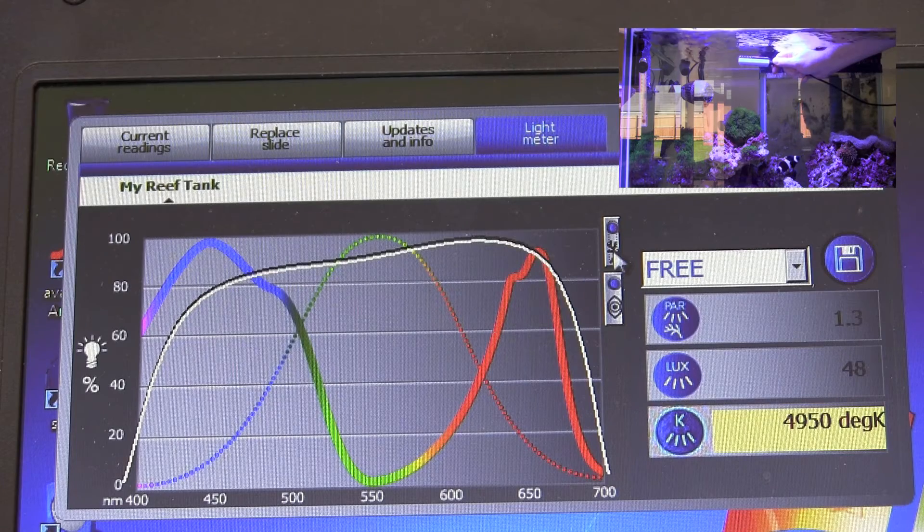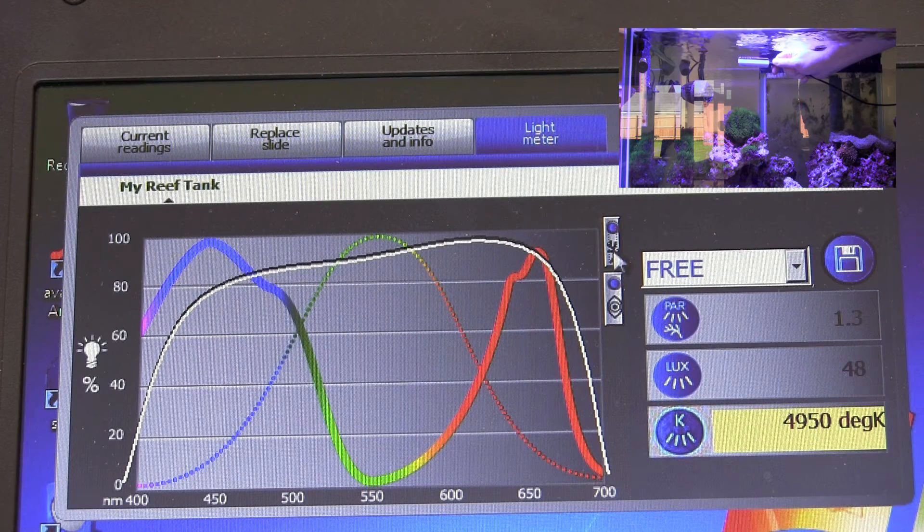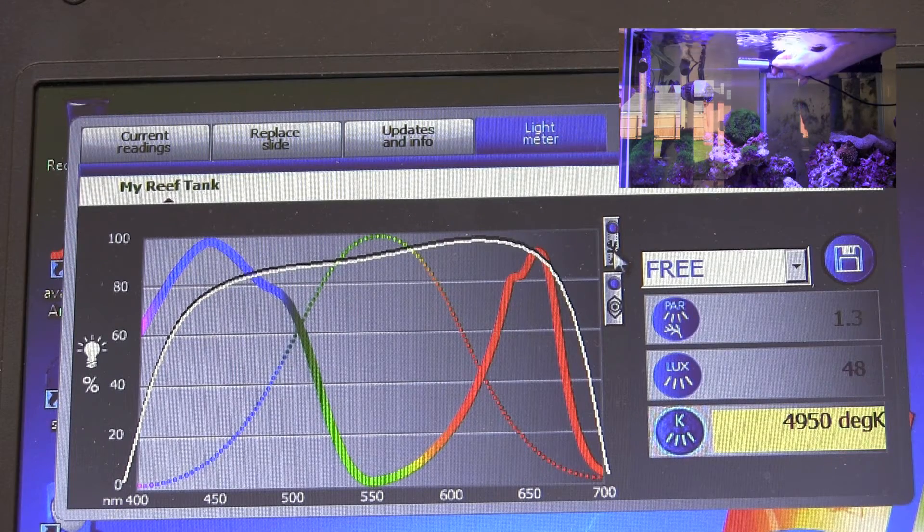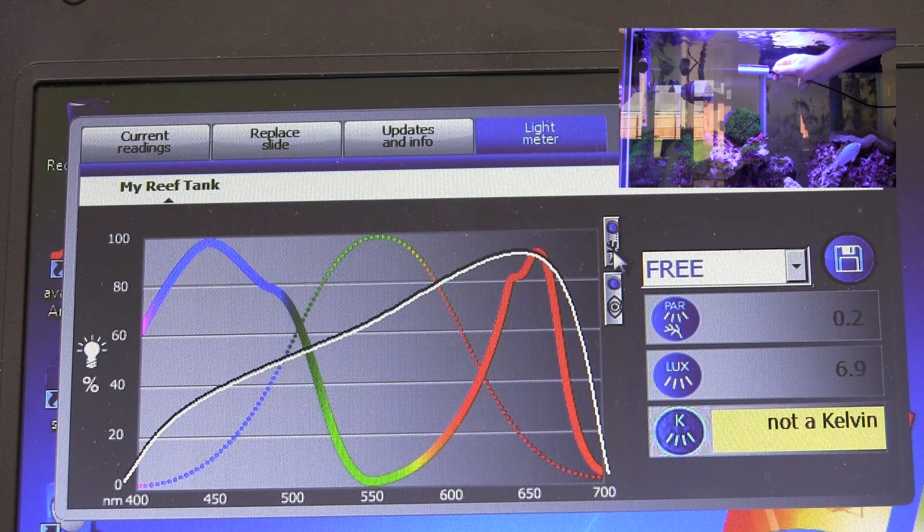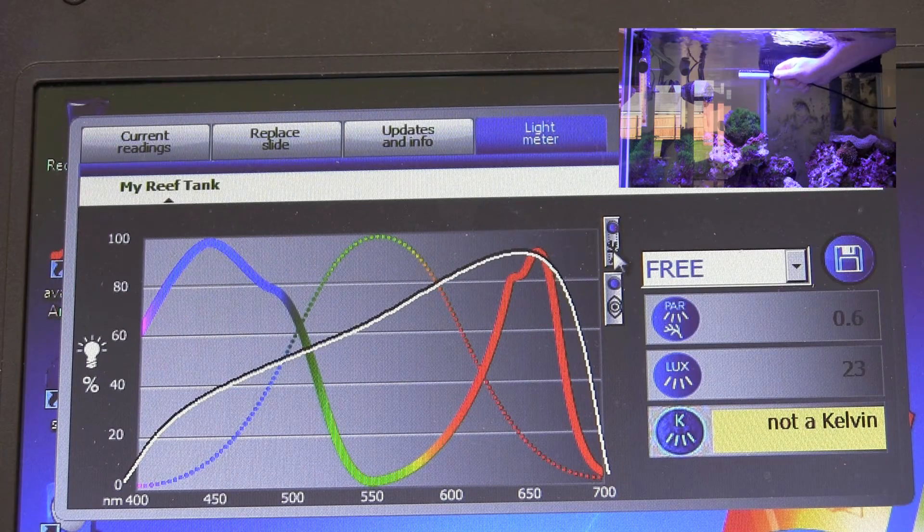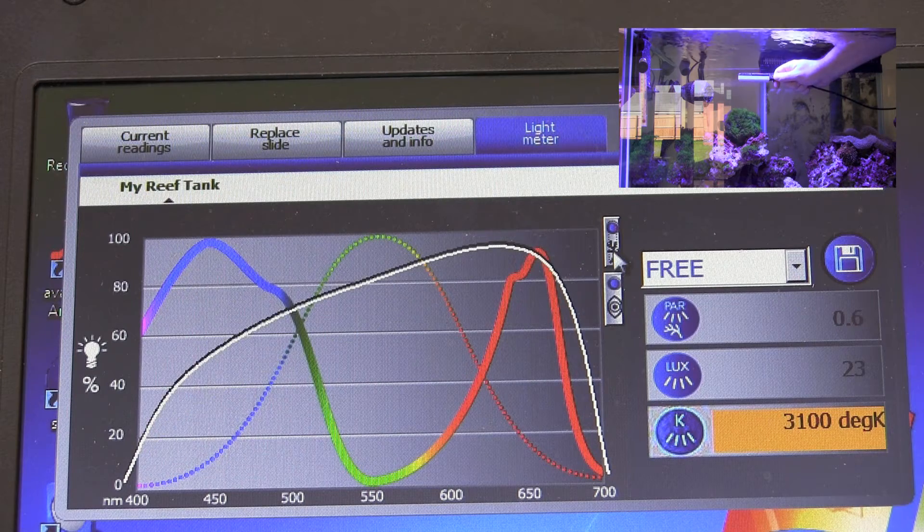The sensor for the light meter is located on the back of the Reef Monitor. Now as you can see, I've started at the top of my tank and I'm going to slowly move down. As I start to move down, you'll see readings start to change.